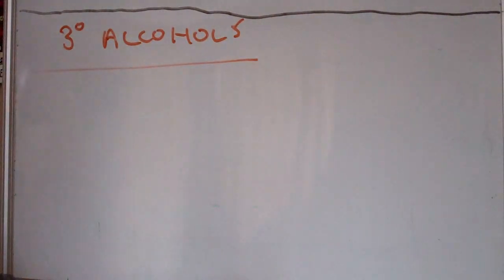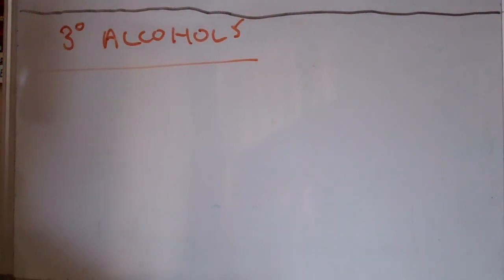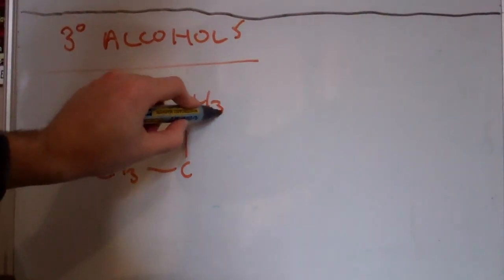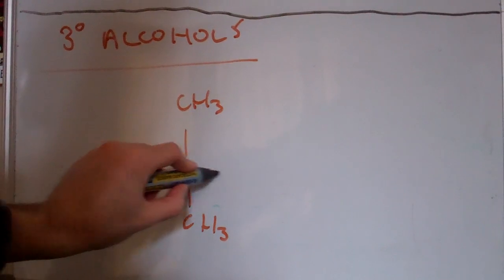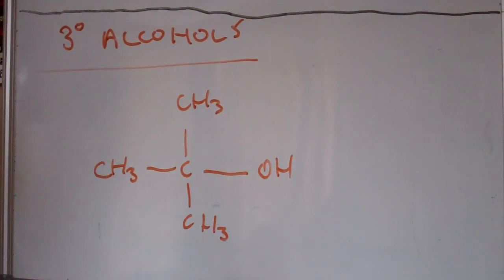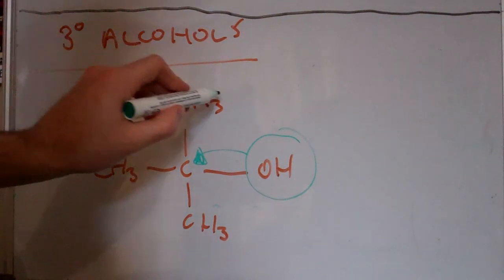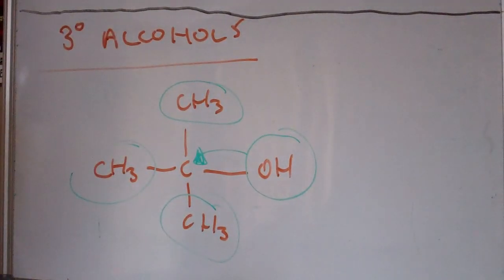Now if we look at tertiary alcohols, which is the next type, you can probably guess what the difference is going to be. If you guessed that the hydroxyl group is bonded to a carbon that is bonded to three methyl groups, then you would have guessed correctly. Here's our hydroxyl group — it's bonded to a carbon that has got three methyl groups attached to it: one, two, three. This is a tertiary alcohol.